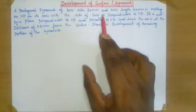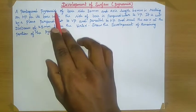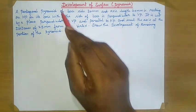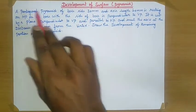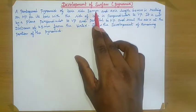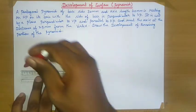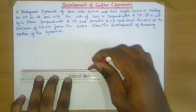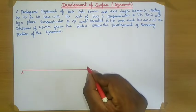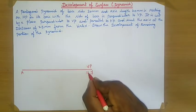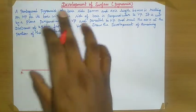In this video we are going to draw the front view and top view of this pentagonal pyramid. First, draw one reference line and name this line as X and Y. This one is the vertical plane and this one is the horizontal plane.